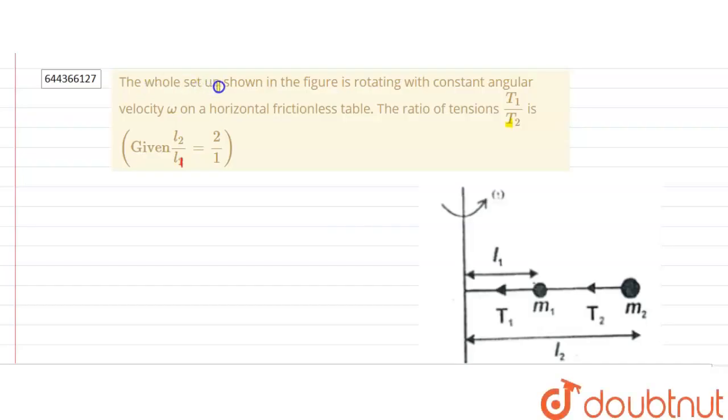Hello, the question says the whole setup shown in the figure is rotating with constant angular velocity omega on a horizontal frictionless table. The ratio of T1 by T2 is given, L2 by L1 is 2 by 1.